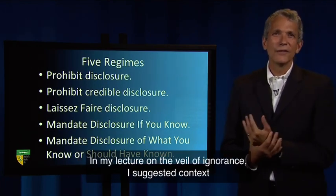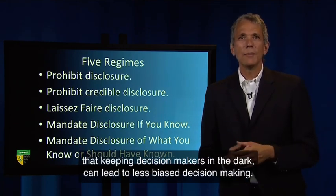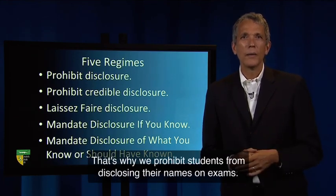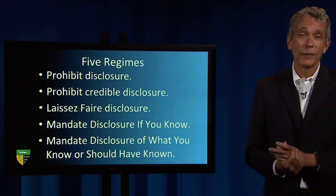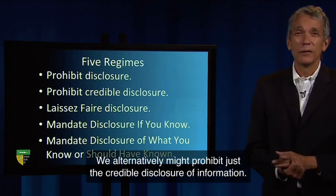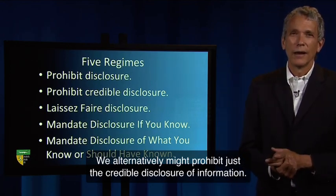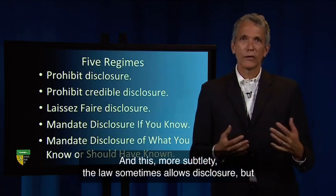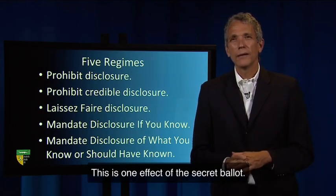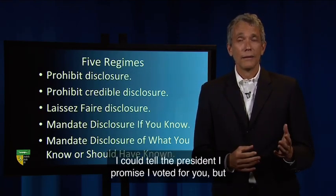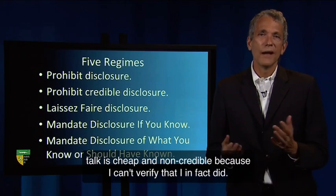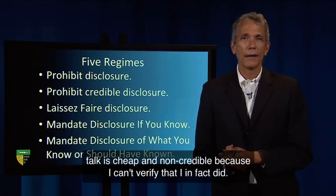In my lecture on the veil of ignorance, I suggested that keeping decision makers in the dark can lead to less biased decision making. That's why we prohibit students from disclosing their names on exams. Alternatively, the law might prohibit just the credible disclosure of information. More subtly, the law sometimes allows disclosure but undermines the credibility of any claims. This is one effect of the secret ballot — I could tell the president I promise I voted for you, but talk is cheap and non-credible because I can't verify that I, in fact, did.